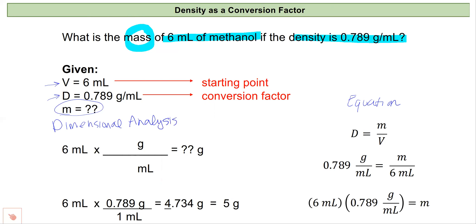If we use dimensional analysis, my starting point is milliliters and my endpoint is grams. So I put my grams on the top of my conversion factor and milliliters on the bottom so they'll cancel out. Grams per milliliter is the density given to me right here. So I'll plug that in as my conversion factor: six milliliters times 0.789 grams divided by one milliliter. And that's going to give me 4.734 grams. I'll report it to one sig fig because that's what I started with, and I'll get 5 grams.